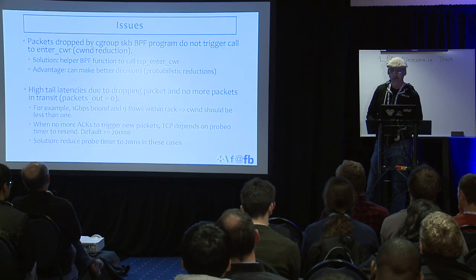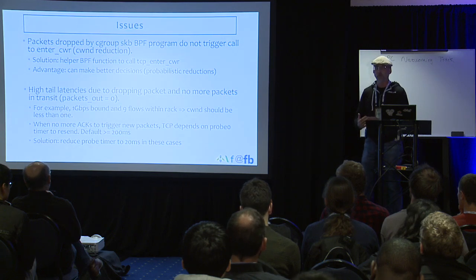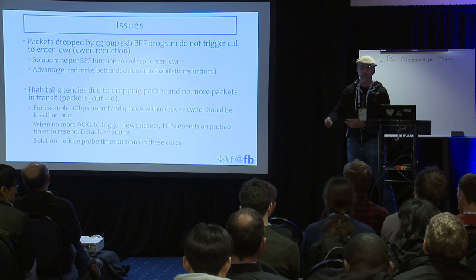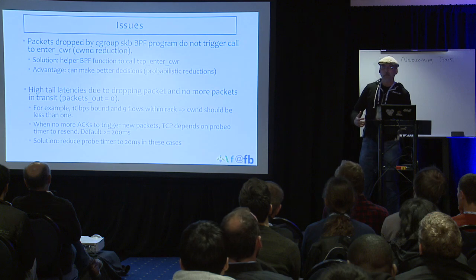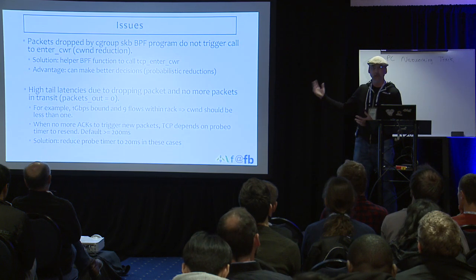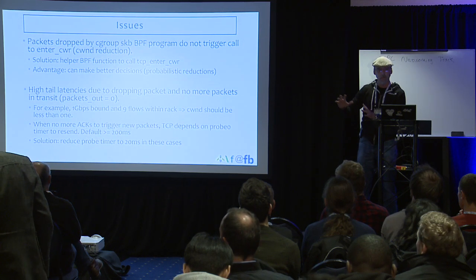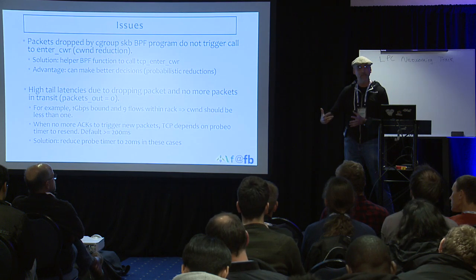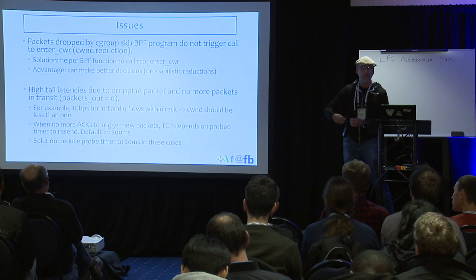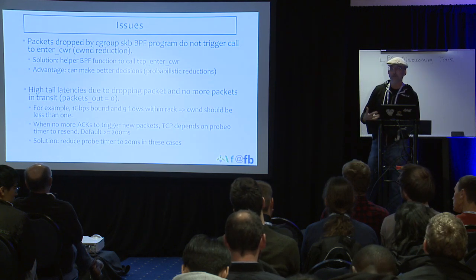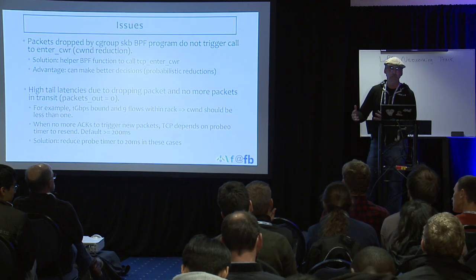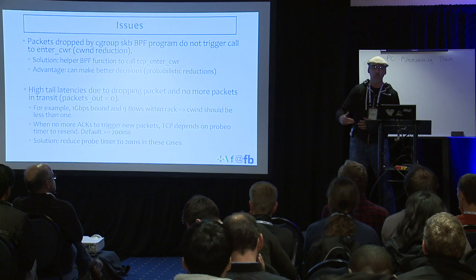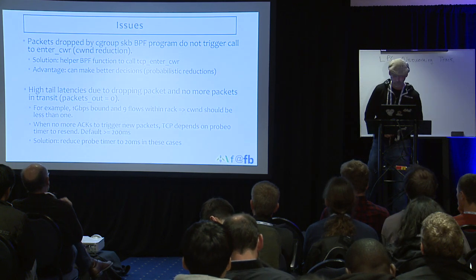The other issue was high tail latencies in cases where we dropped a packet but there were no packets in transit — so there were no ACKs coming in to trigger a retransmission. For example, with nine flows and a one gigabit limit for the cgroup, the average congestion window would be one packet or less, meaning we'd need to drop packets. With no other packet to trigger resending, TCP uses the probe timer to resend it, which is 200 milliseconds. The solution was to detect when we drop a packet and there are no packets in flight, and reduce the probe timer to 20 milliseconds.